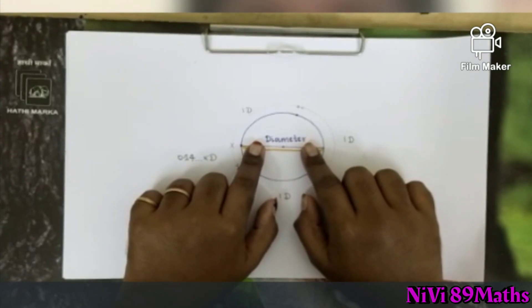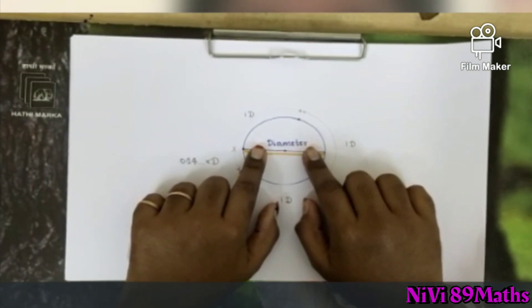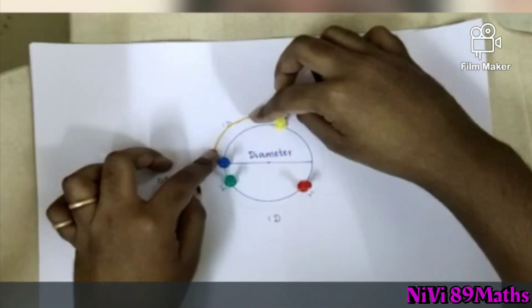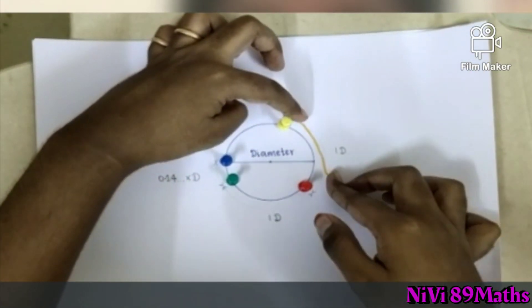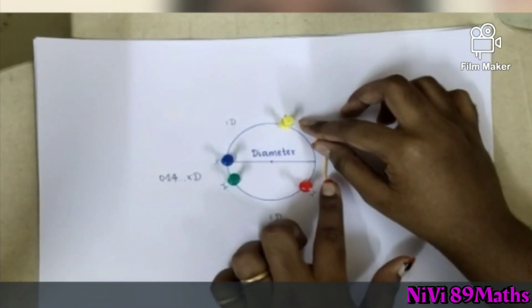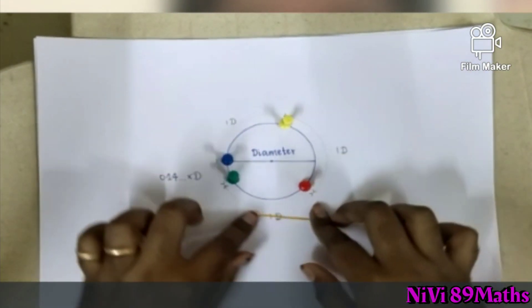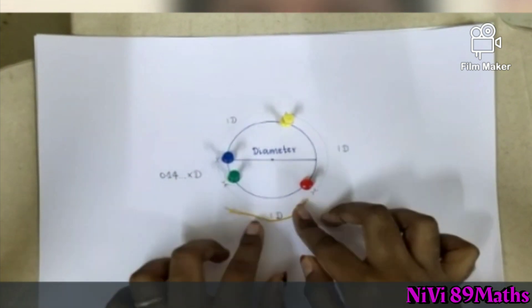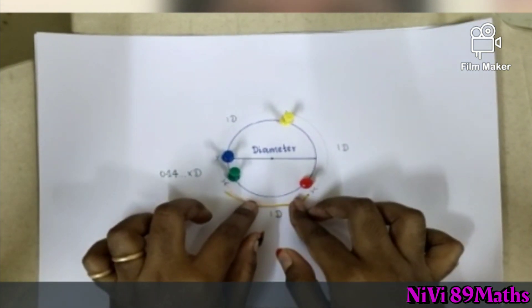If you look at the circle, you can measure the diameter as the first step. You can measure using a thread along the boundary. The boundary goes from the center of the circle to the circle — that is the diameter of the circle.